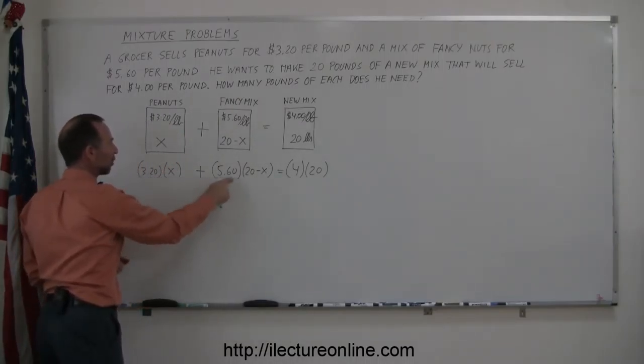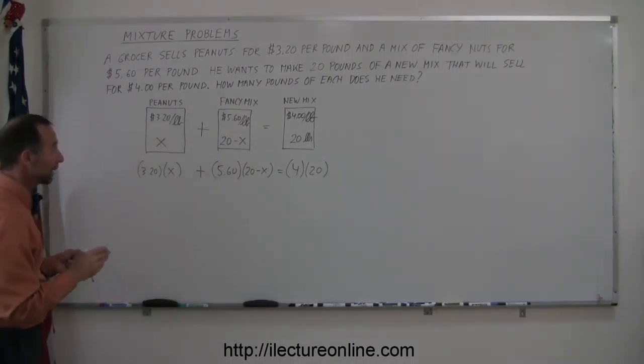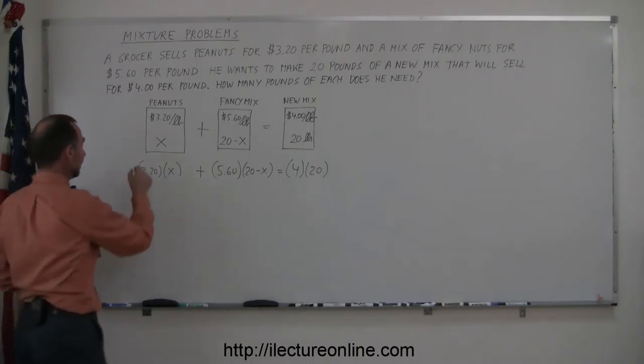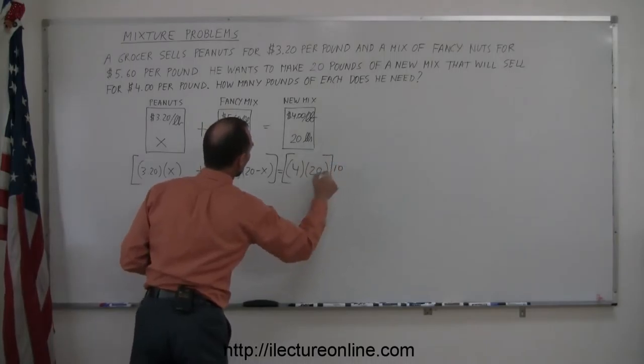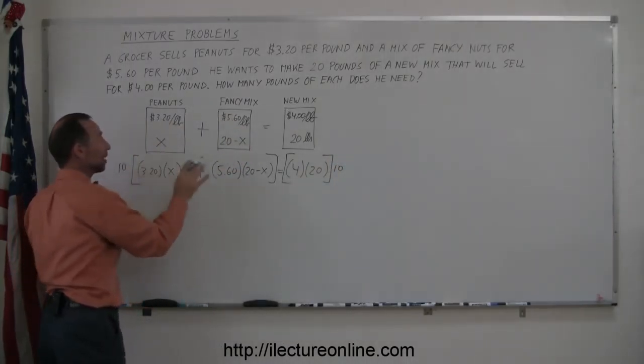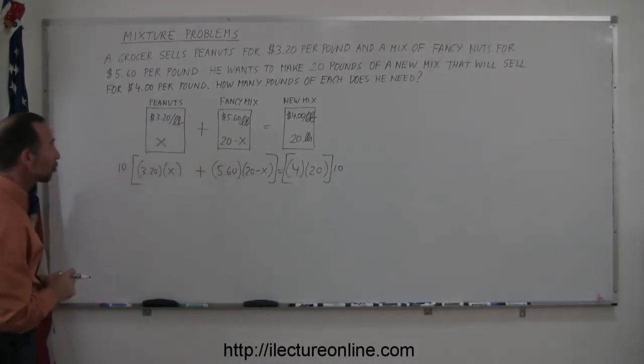That will get rid of the decimal places. So multiply the left and the right side by 10. Remember, if you do exactly the same on both sides of the equation, nothing has changed. The equation is still true as before.